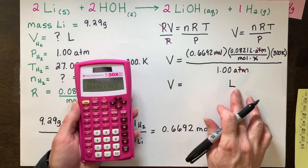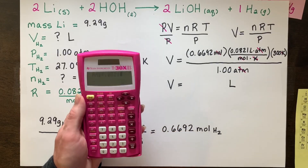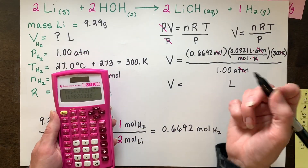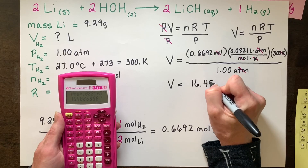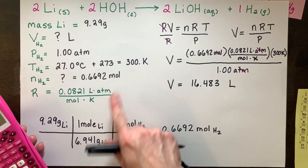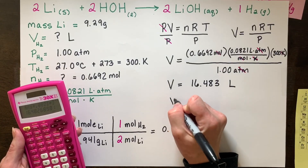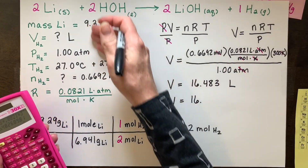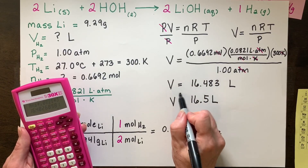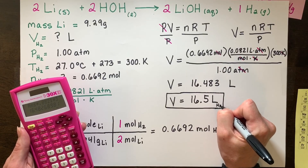I've got that number already in there, so I'm going to multiply by 0.0821, times 300, then divide by 1 — same answer. So 16.48 — but we can't keep all of that. I had 3 significant figures in my given data, so I can only keep 3 significant figures. Because these are measurements you had in lab. So that's your volume for your hydrogen — 16.5 liters.